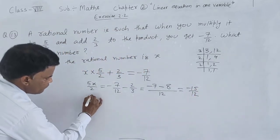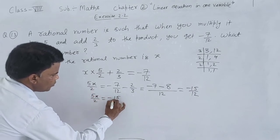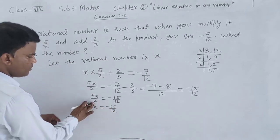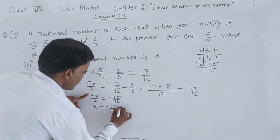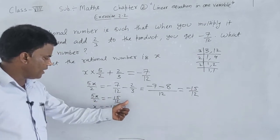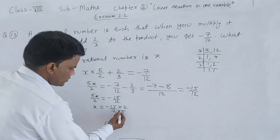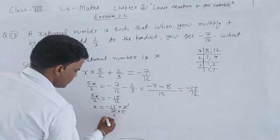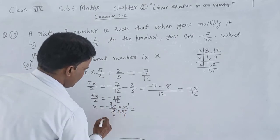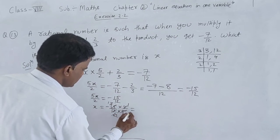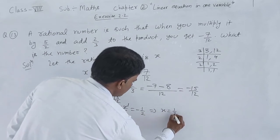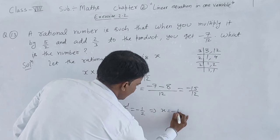Now we have 5x upon 2 equals minus 15 upon 12. To find x, multiply becomes divide. Cancel: 2 and 12 gives 6, 5 and 15 gives 3. 3 times 6 is 18. So value of x is minus 1 upon 2.